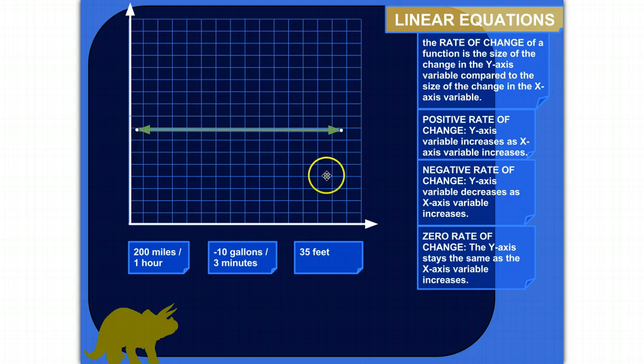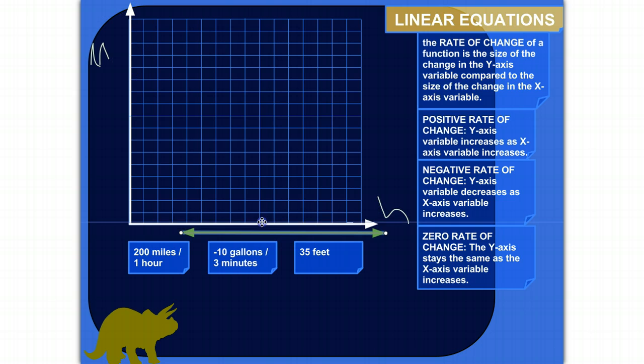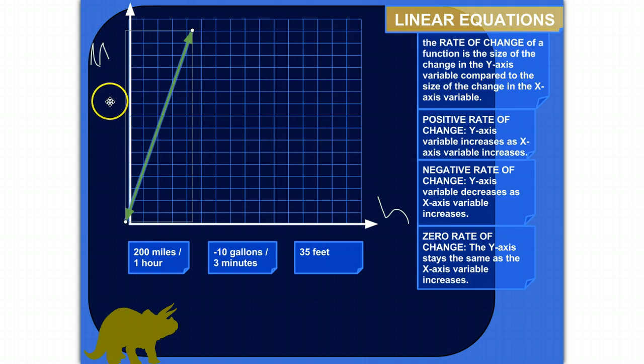So some examples of positive, negative, and zero rates of change would be, say like we do a graph of miles per hour. So I could do miles over here on my y-axis and hours here. If my rate of change is 200 miles per hour, that's a positive rate of change because the y's are getting bigger as the x's are getting bigger. Actually, it would be a pretty dramatic positive rate of change. These guys would be increasing 200 for every time that this guy increases 1.